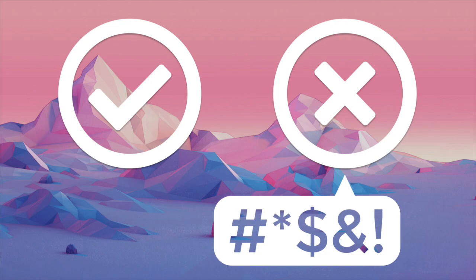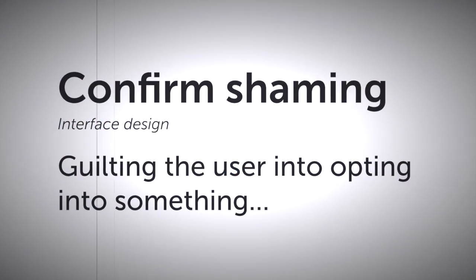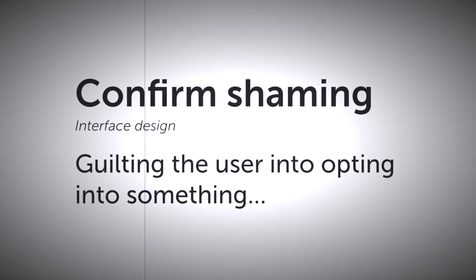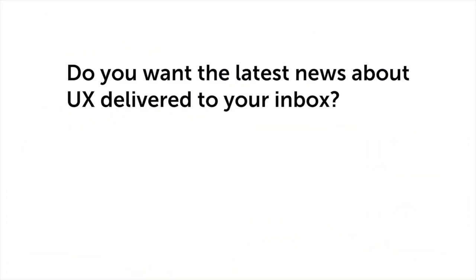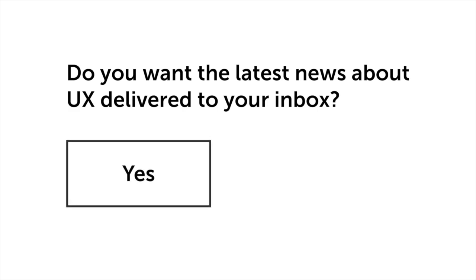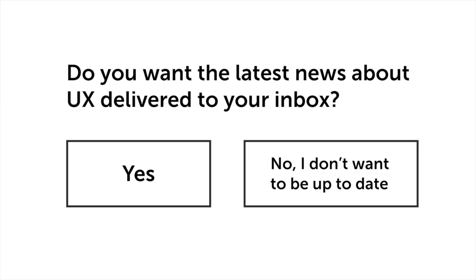Okay Andy, I'm going to talk to you about confirm shaming. Have you heard of this? No. Confirm shaming is the act of guilting the user into opting into something. So you mean like when you go to an article and it says 'do you want the latest news about UX delivered to your inbox?' and the options are a form you can fill in to say yes, or the other option is like 'no I don't want to be up to date' — something really guilting on the decline button?